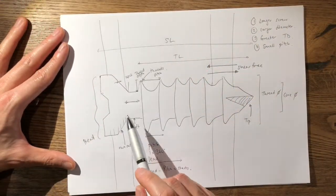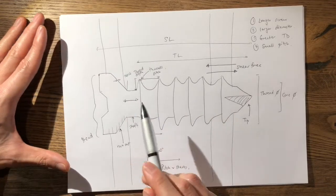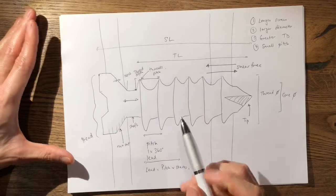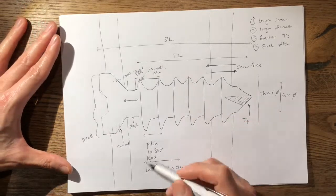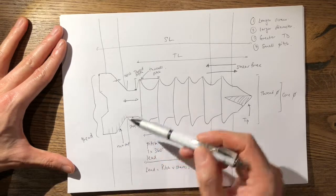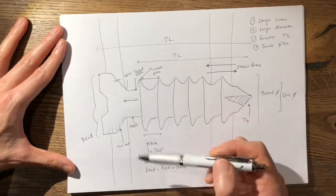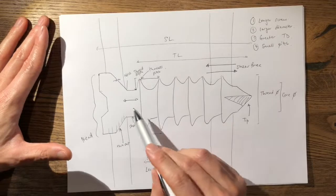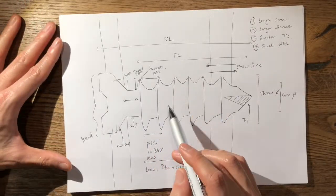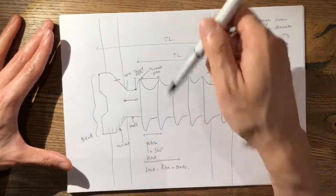It is also important to note that distal locking screws used in tibial nails or femoral nails have a relatively high core diameter compared to their thread diameters. This is purely because locking screws need to resist the bending forces placed upon them.